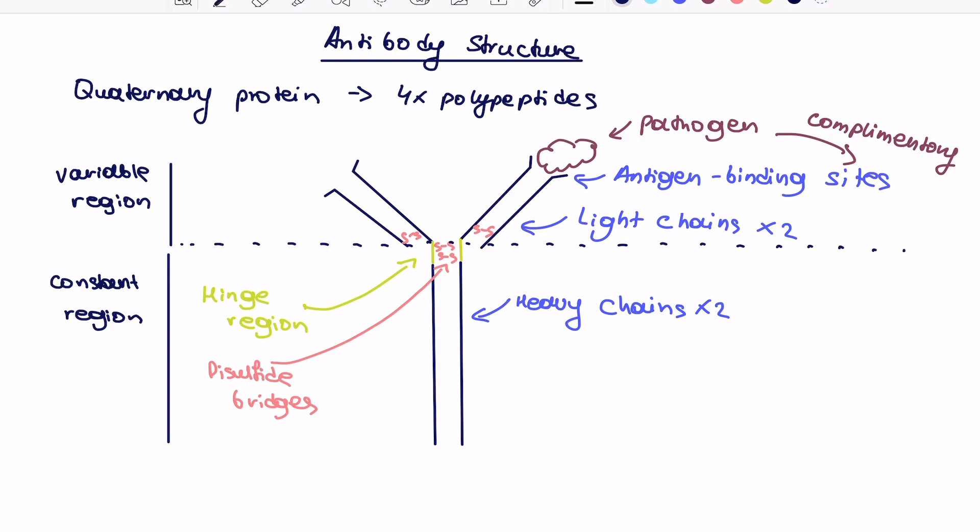So the variable region is the one that changes a lot. As you can appreciate, antigen binding sites have to vary between different antibodies because they're going to be complementary to different antigens. Constant region primarily remains constant, and that particular part binds to macrophages or is already bound on the mature B lymphocytes as antibody receptors.